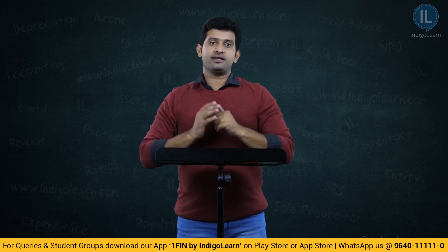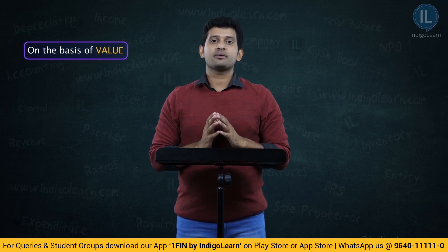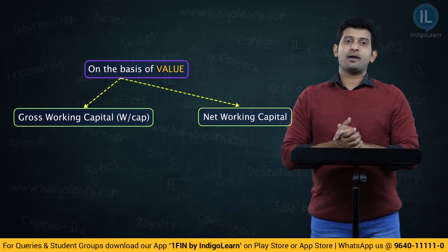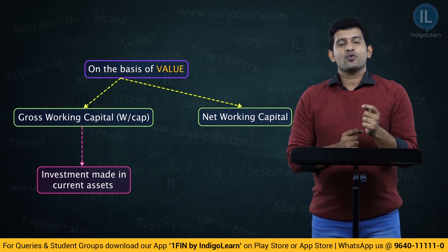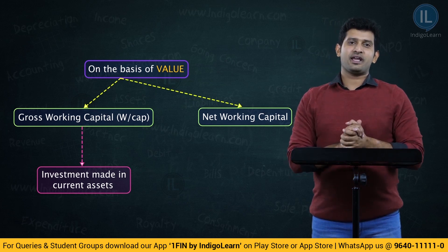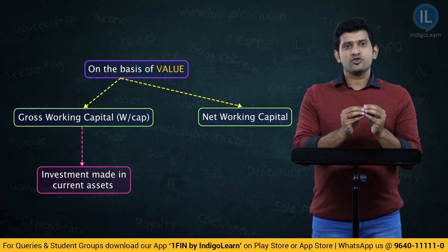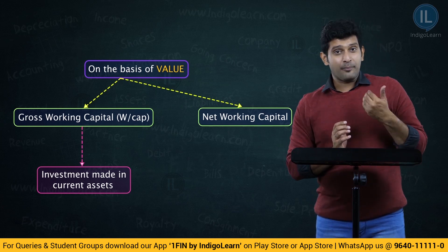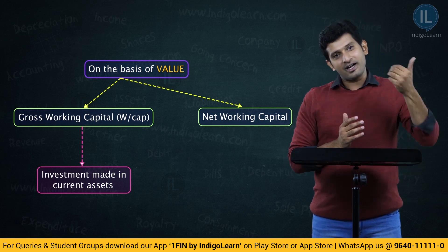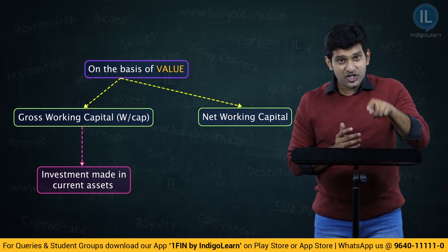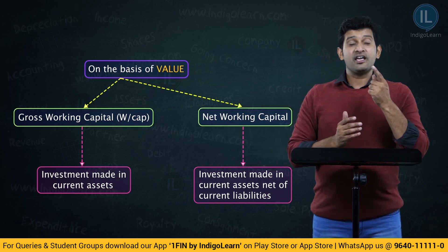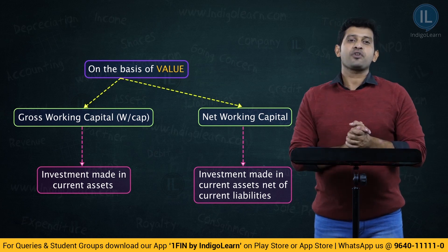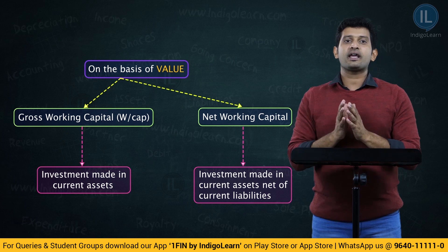The concept of working capital can be understood in two angles: the first on the basis of value, and the second on the basis of time. On the basis of value, working capital is defined as gross working capital or net working capital. Gross working capital signifies the total investment made in current assets — whatever is invested in current assets itself is called gross working capital. Current liabilities will support in reducing working capital to some extent, so when we consider current assets minus current liabilities, that reduced value of working capital is called net working capital.